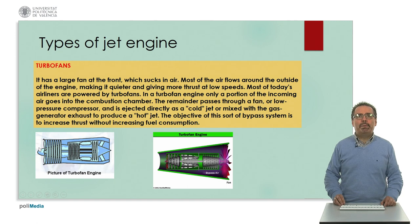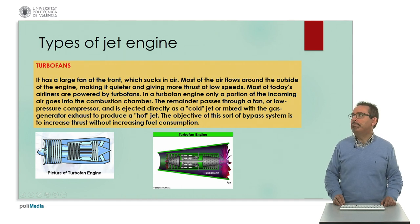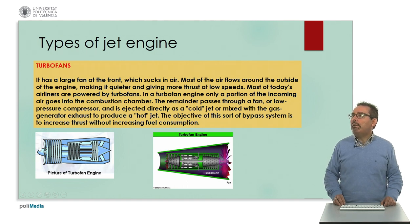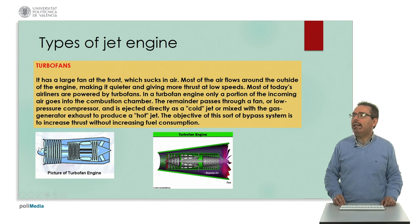The next type is turbofans. This type has a large fan at the front which sucks in the air. Most of the air flows around the outside of the engine, making it much quieter and giving it more thrust at low speeds. This is the most important function and specification of this type of engine. Most of today's airliners are powered by turbofans. In a turbofan engine, only a portion of the incoming air goes into the combustion chamber or the combustor.